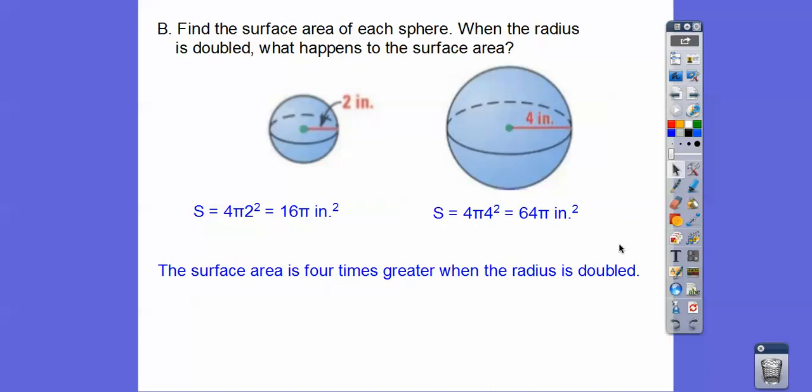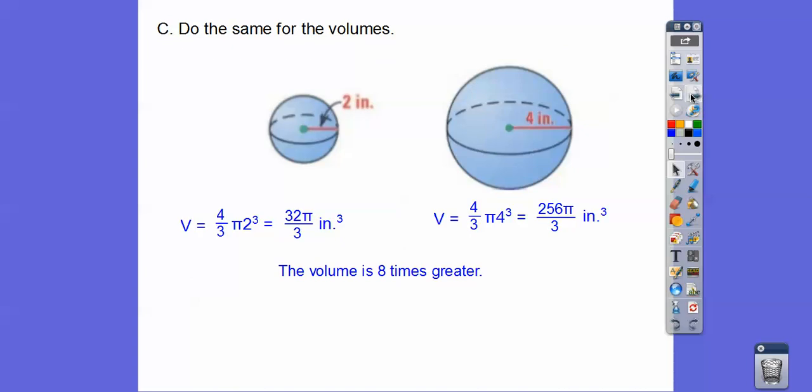2² is 4, so it was 4 times greater. Surface area is always squared, volume is always cubed.